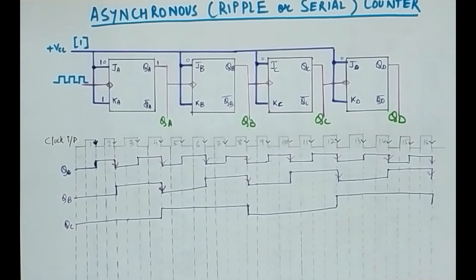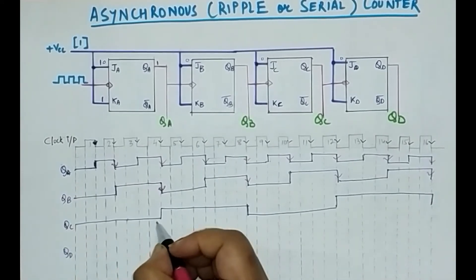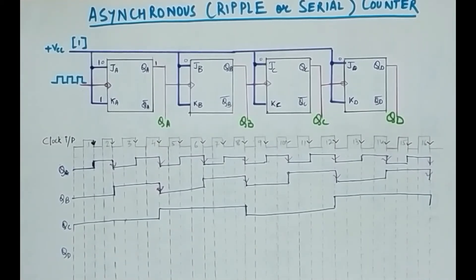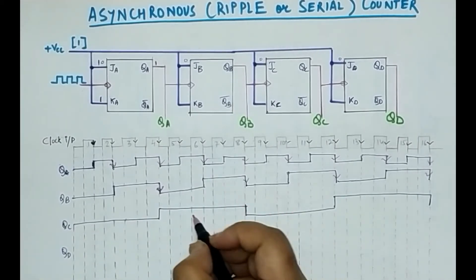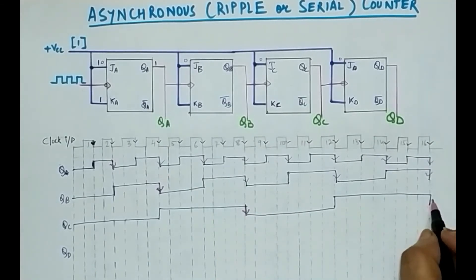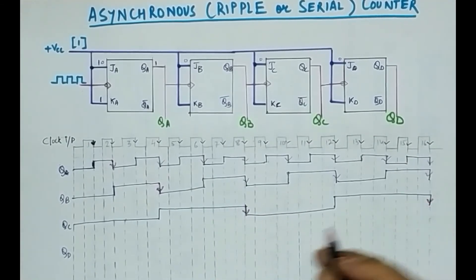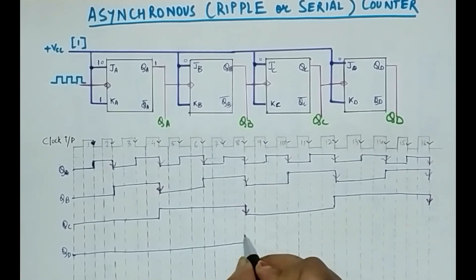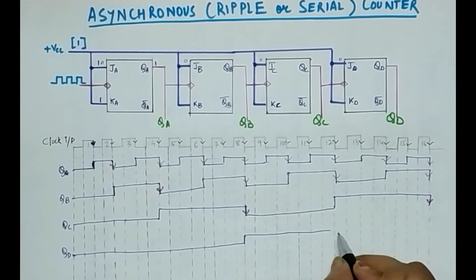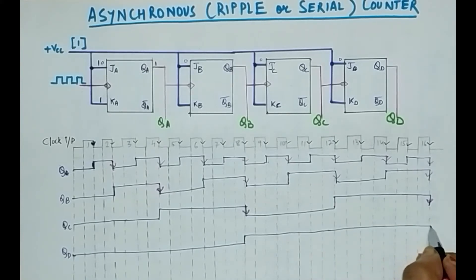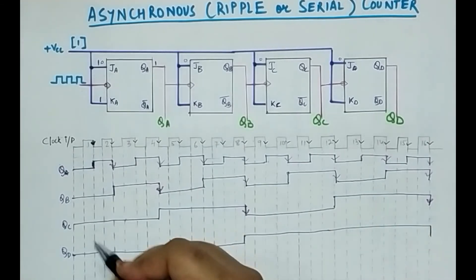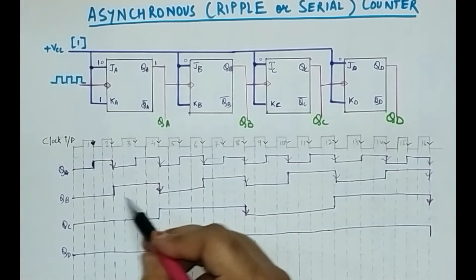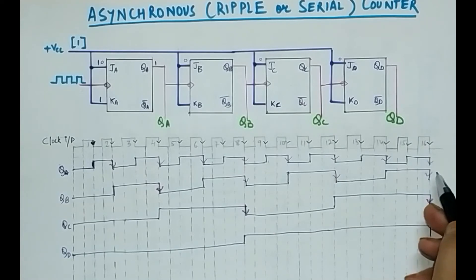Now let us draw QD. QD will change according to QC — it will not change according to QB, QA, or the clock input. There are transitions in QC at certain points, so QD will change only at those points. I am only drawing up to 16 states, because after that the same thing will repeat.